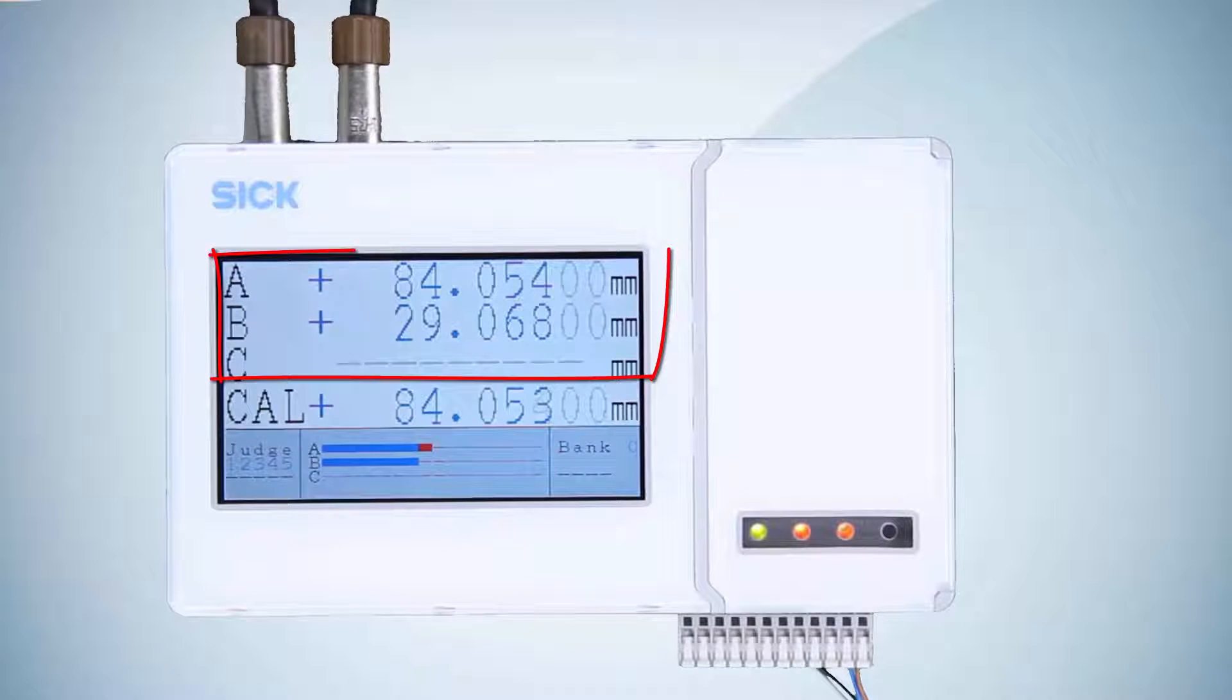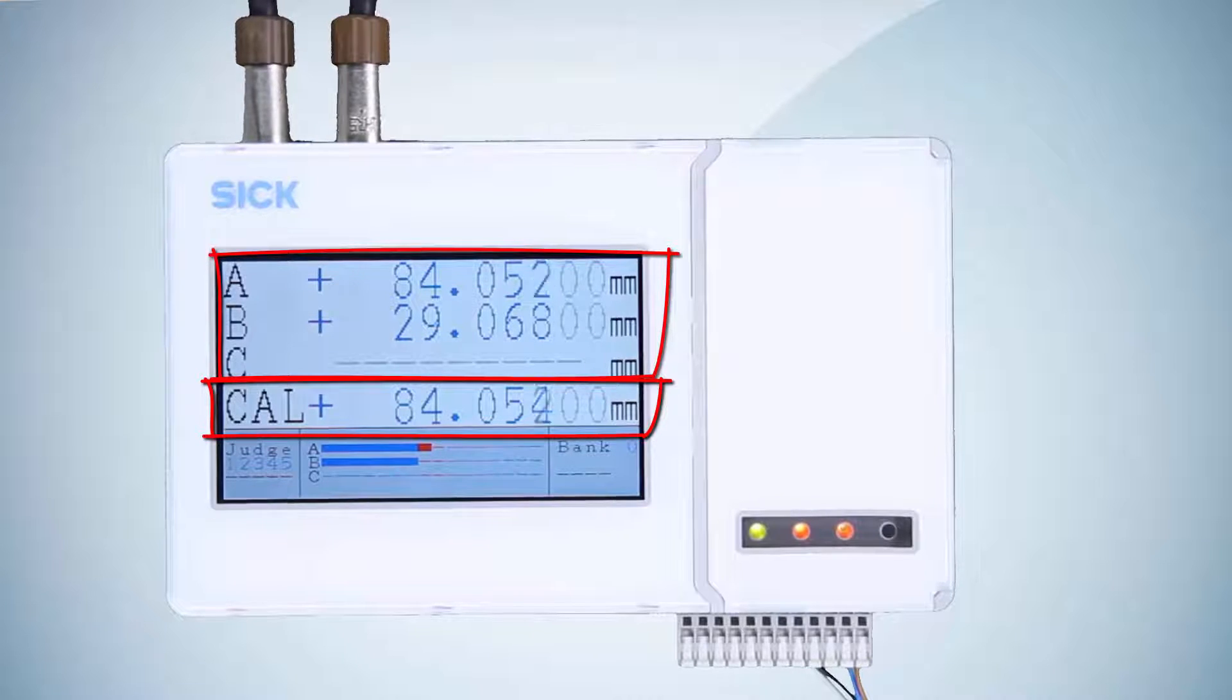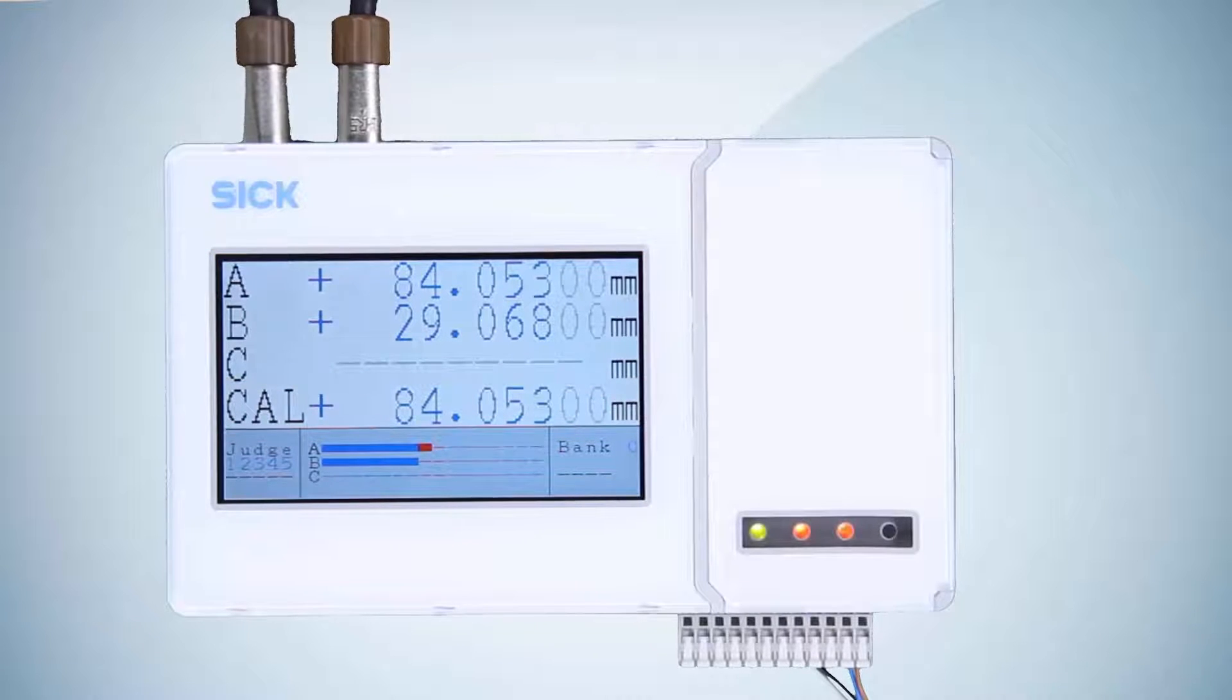The measured values from the sensors and the calculated value are displayed on the screen of the evaluation unit. If no calculation process has been set up, the value from sensor A is shown here.